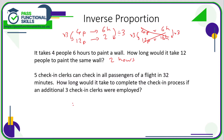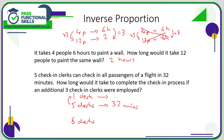In this next example, 5 clerks take 32 minutes to complete a checking process. How long would it take if an additional 3 were employed — so 8 clerks total? We can't go from 5 to 8 easily, so we work out how long it takes 1 clerk. With 5 times fewer people, the job takes 5 times longer. One person will take 5 × 32 = 160 minutes.